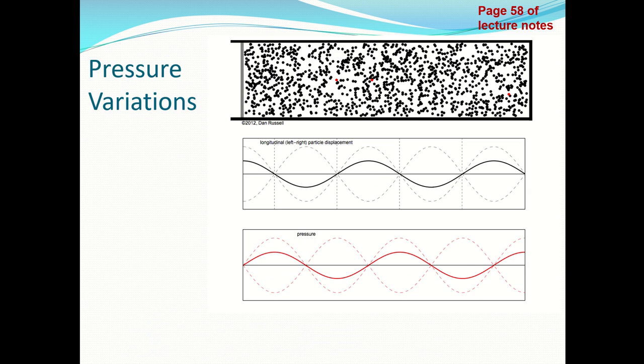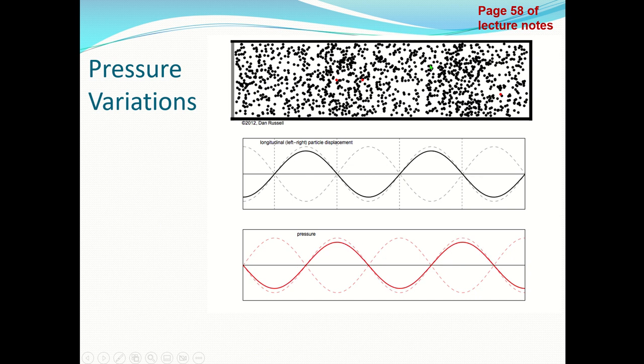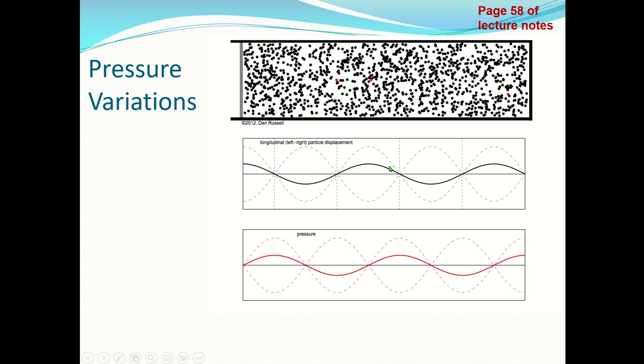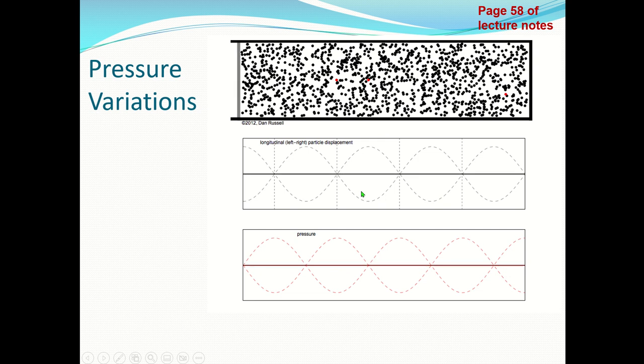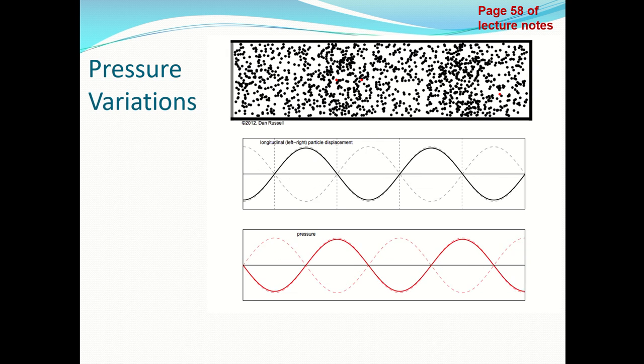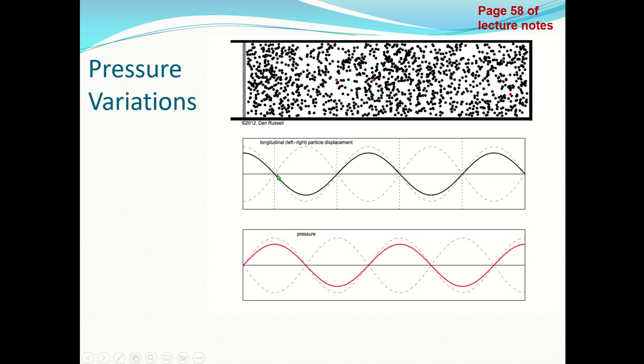What we have here is at the top a diagram that shows how the air molecules are moving. This black diagram shows for all the particles in the tube how the displacement varies with time, and we have our nodes and antinodes varying.